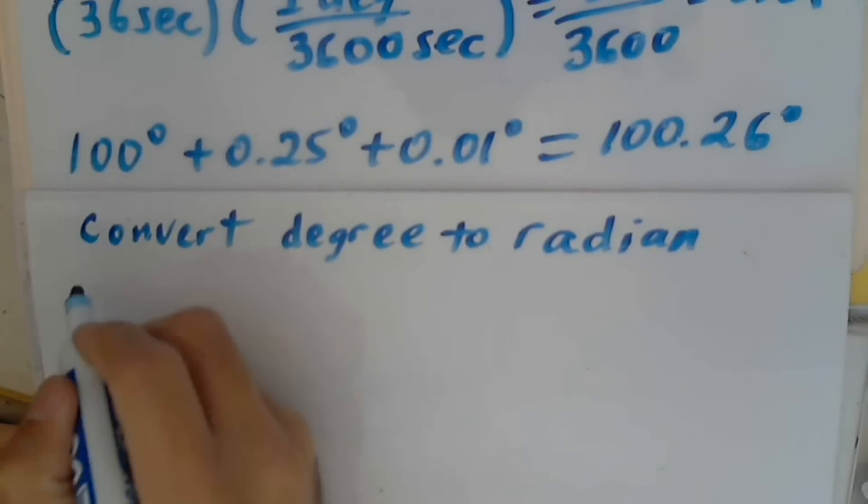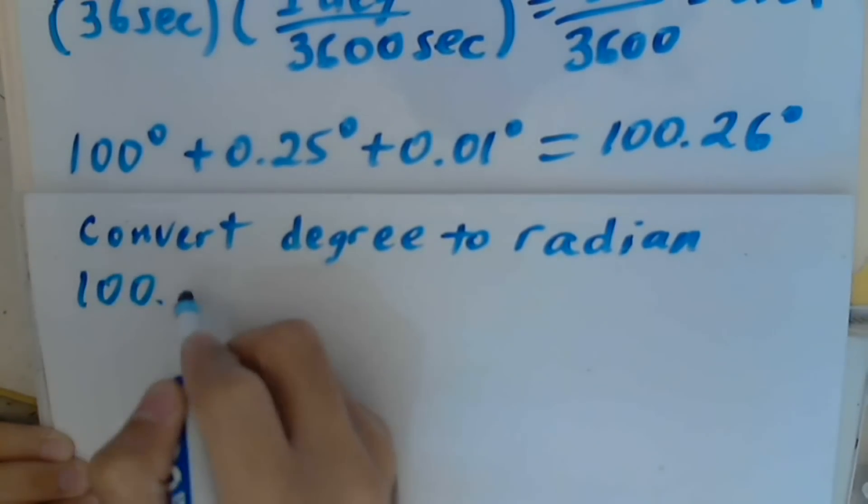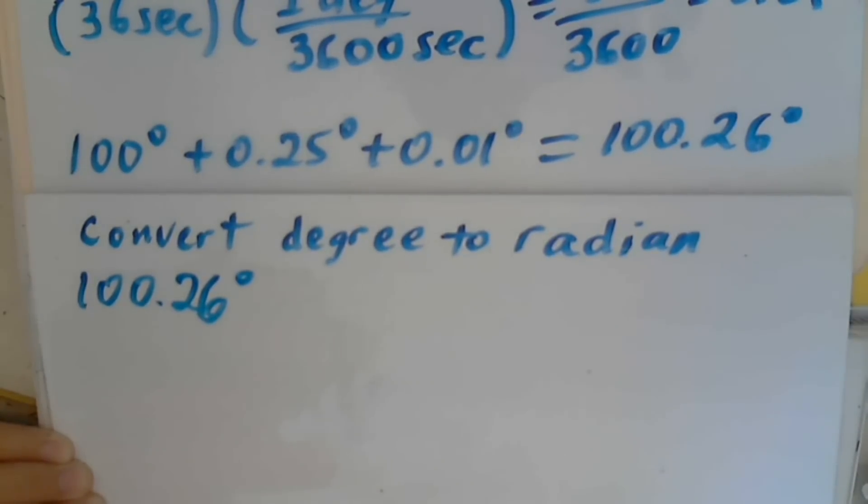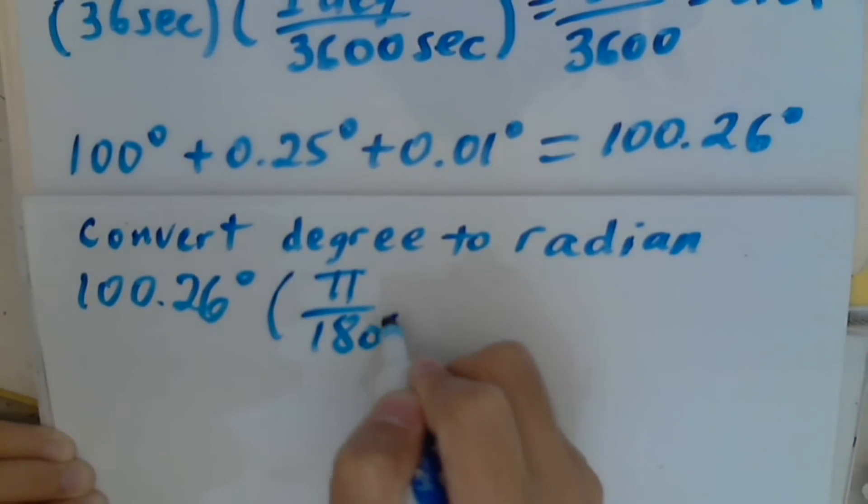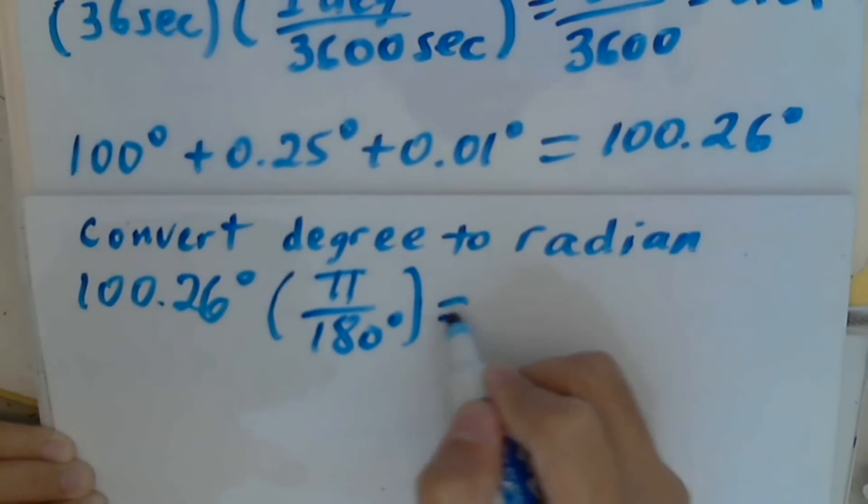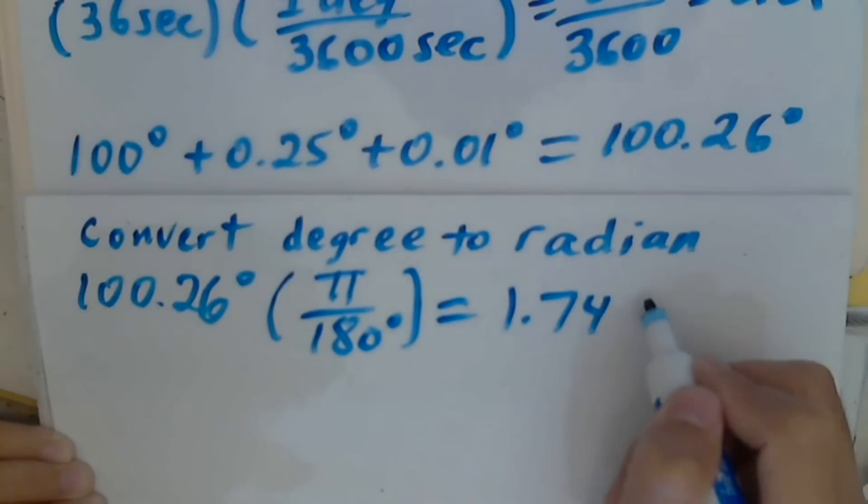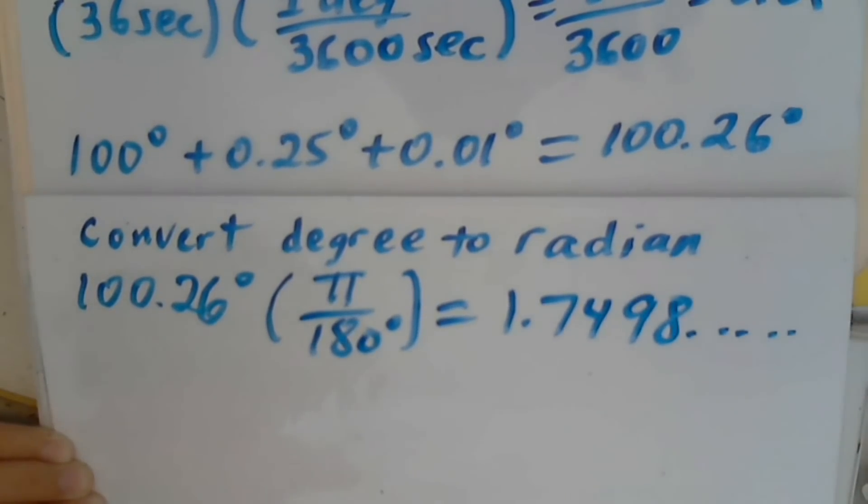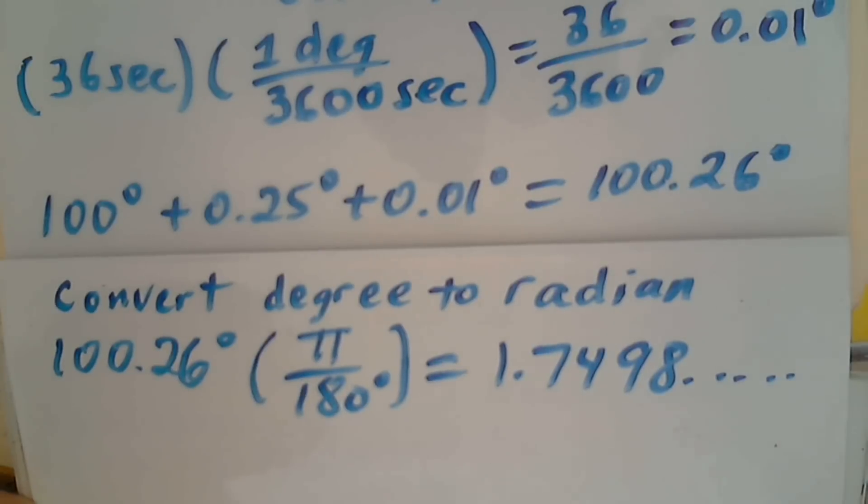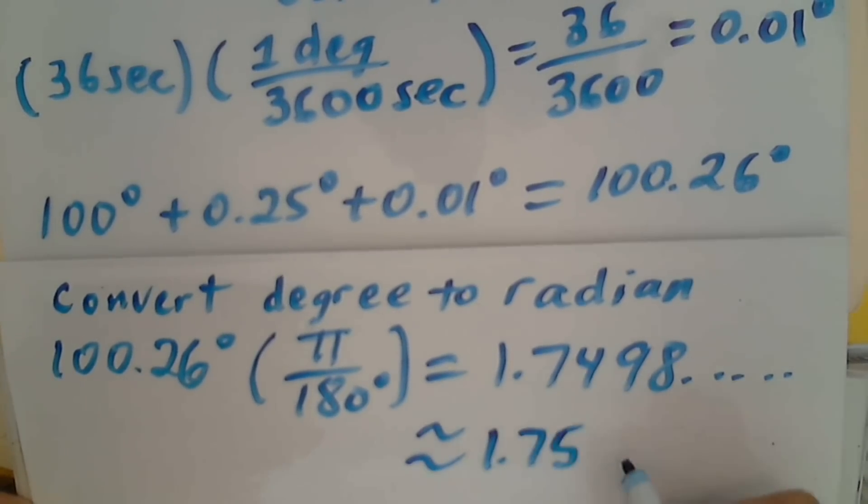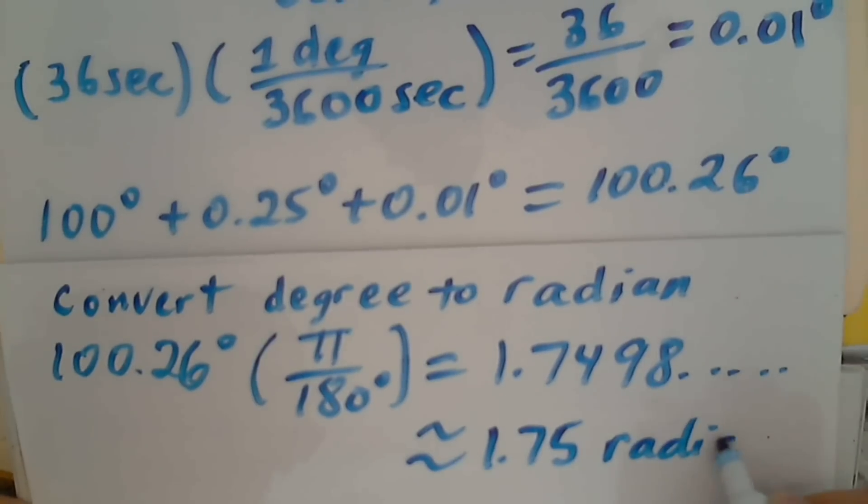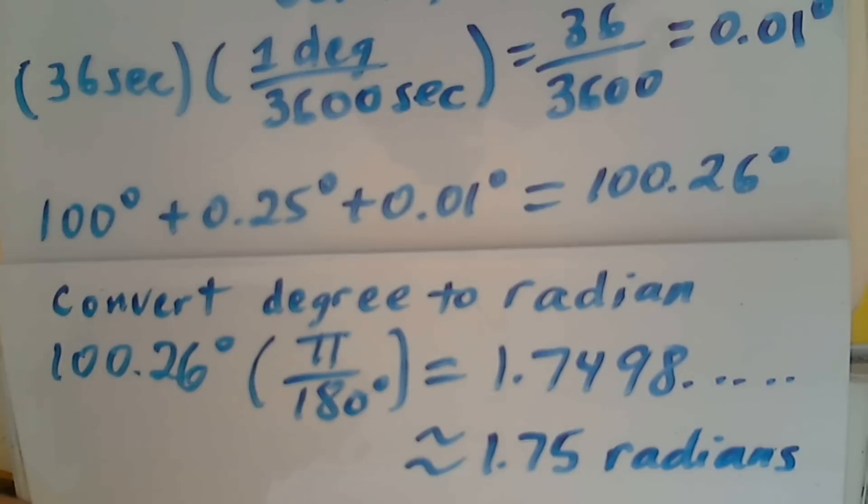To convert 100.26 degrees to radians, I will multiply by pi over 180 degrees. I get 1.7498 and it keeps going. I will round this to the nearest hundredth. I get 1.75 radians.